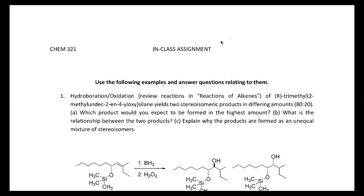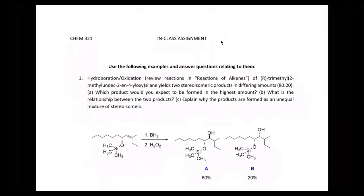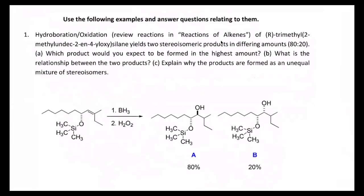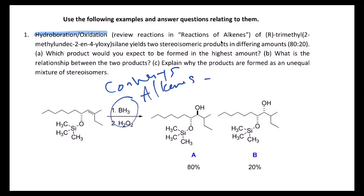Alright, does everybody remember hydroboration-oxidation from organic one? If you take an alkene — a double bond — and treat it with BH3 and then follow that up with hydrogen peroxide, you can convert it to an alcohol. That's a way to convert alkenes into alcohols.